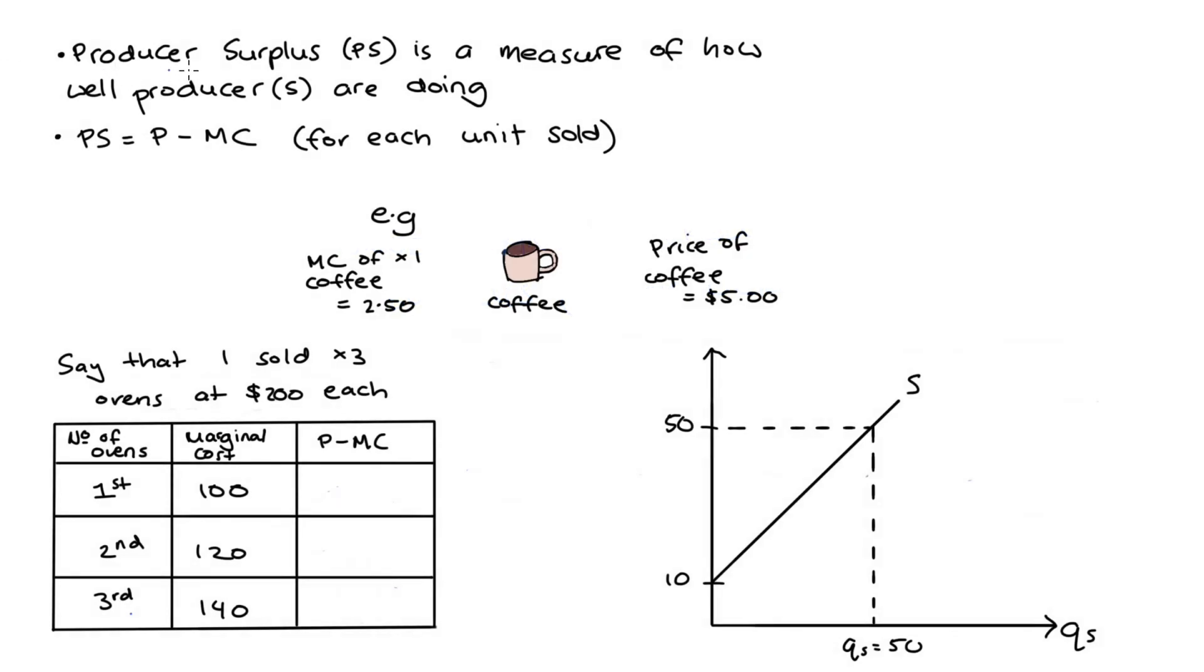Alright, so producer surplus is our way of measuring how well producers are doing and we often use the measure to compare market scenarios or to evaluate the effect of a market intervention on producers. And how we measure producer surplus is we take the difference between the price that the producer sells their good at, that's P, and the marginal cost of production which is abbreviated MC for each unit that the producer sells.